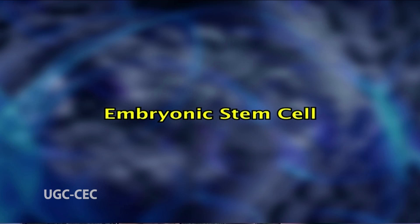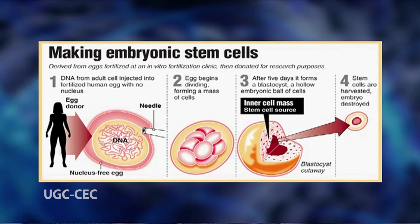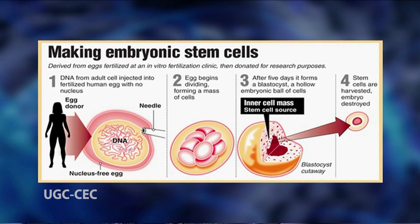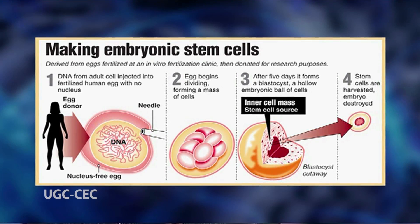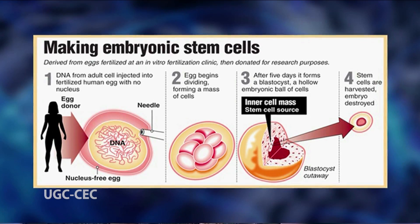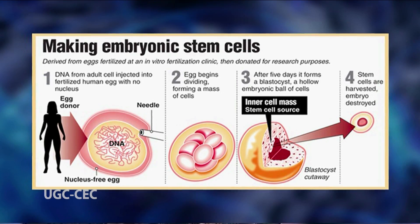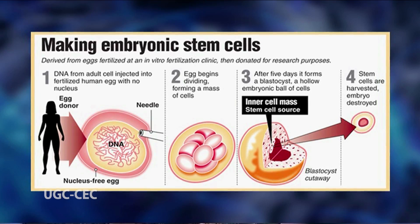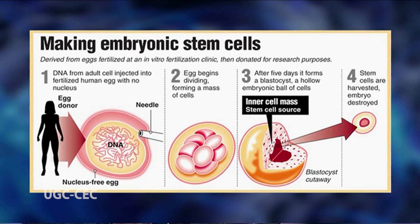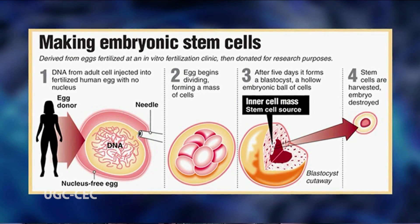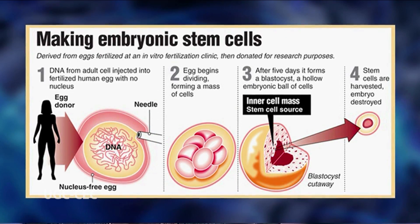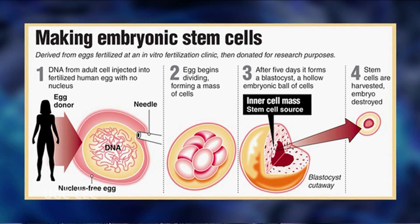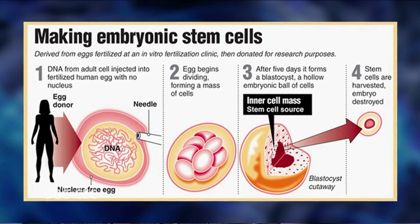Embryonic stem cells are the cells in the early embryo that give rise to all various structures of the mammalian fetus. Unlike adult stem cells, embryonic stem cells are clearly pluripotent — capable of differentiating into every type of cell in the body. In most cases, human embryonic stem cells have been isolated from embryos provided by in-vitro fertilization clinics.